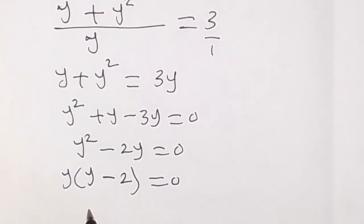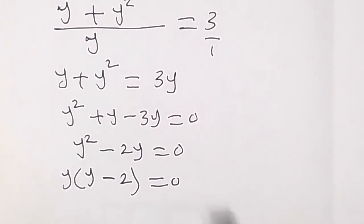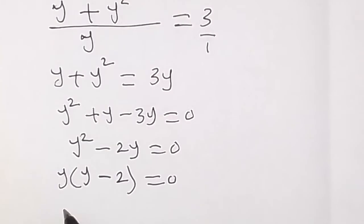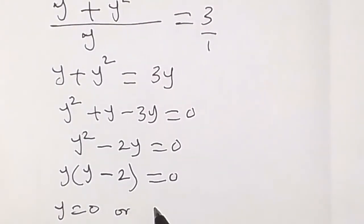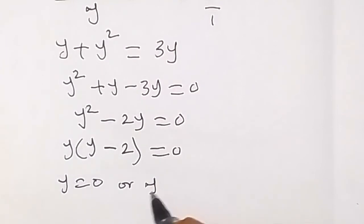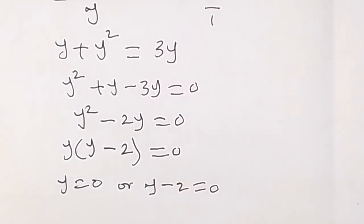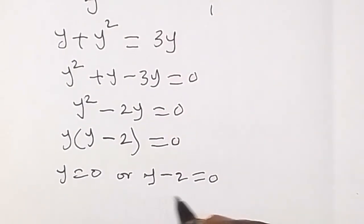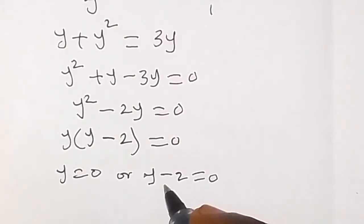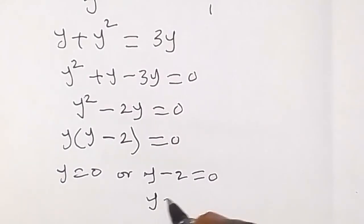So two numbers multiply, the result is zero, it implies that either one of them has to be zero. That means here we have y equals to zero, or y minus 2 equals to zero. From there, y equals to zero here, and this one when we take minus 2 to the other side, that's y equals to 2.